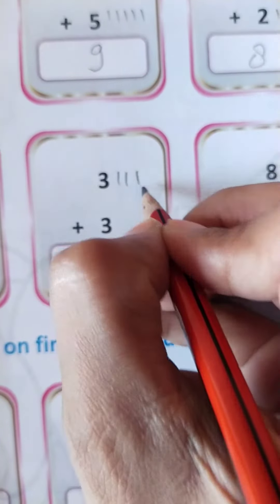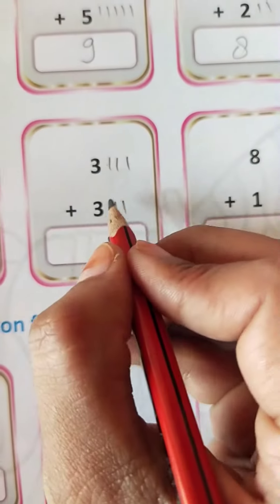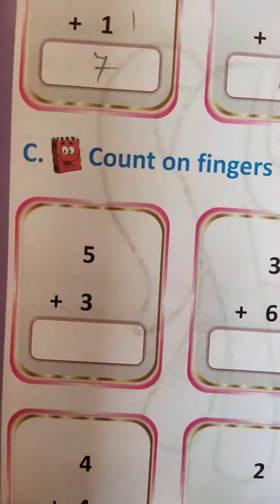Here 3. So you will draw 3 lines here. And you will draw the 3 lines here. 1, 2, 3, 4, 5, 6. So you will write 6 here. Students like this, you will solve all the questions.